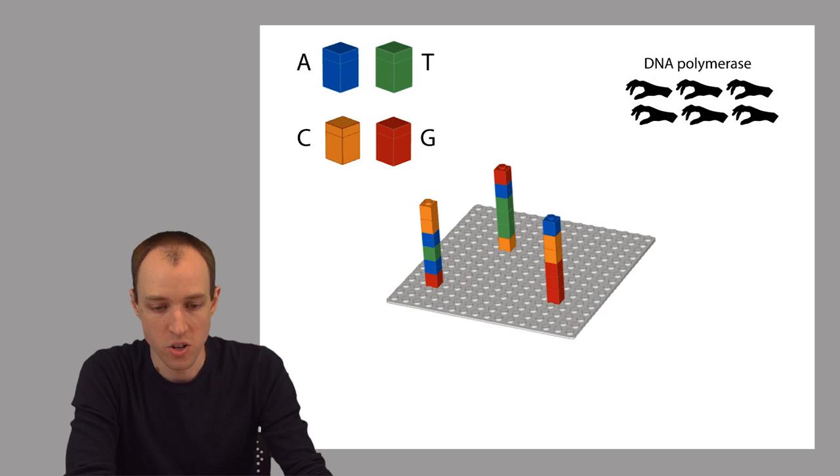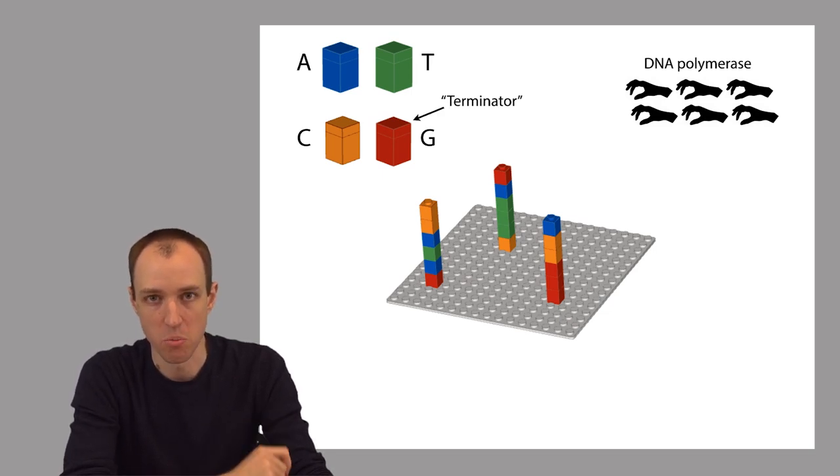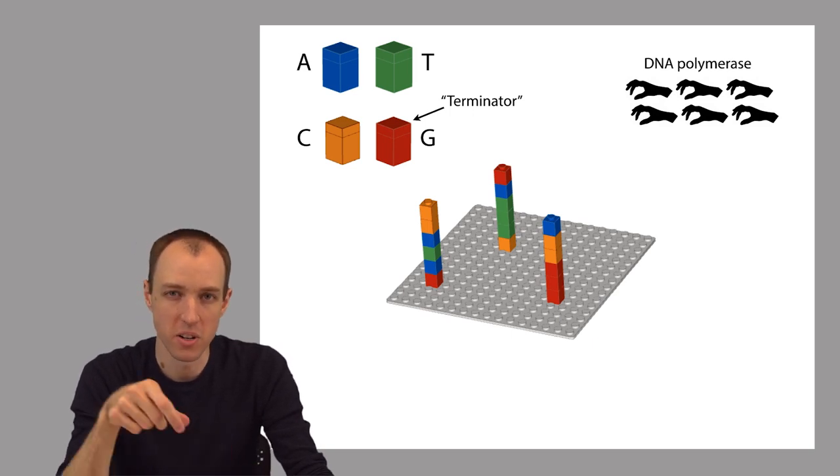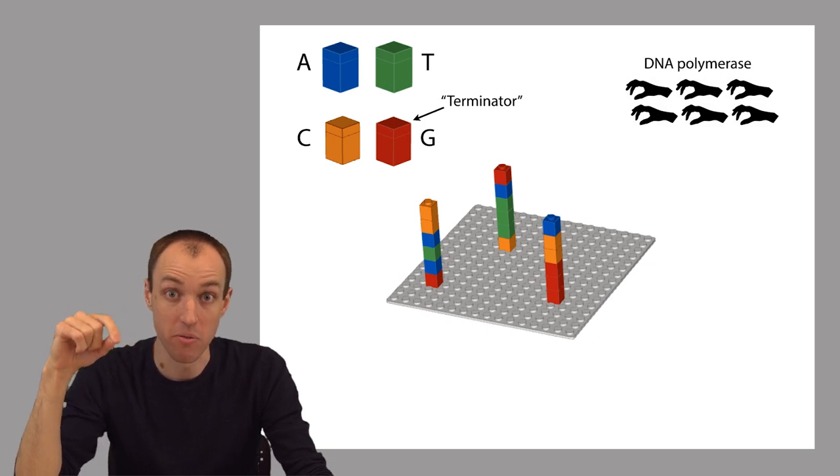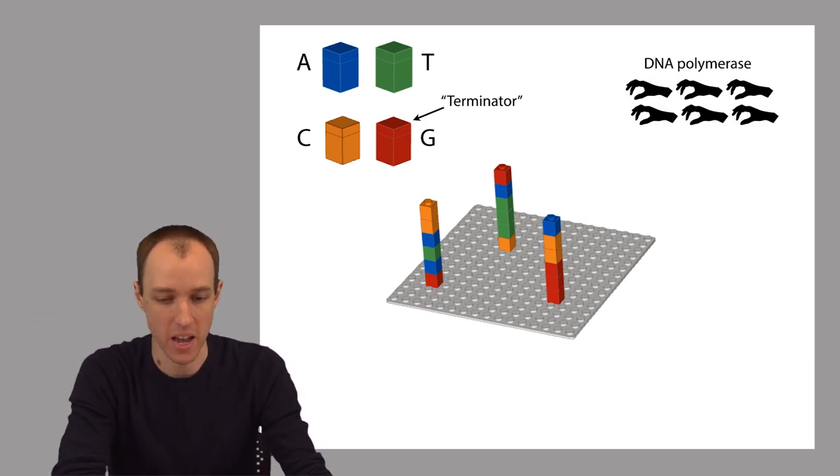Now, since we've thrown in this DNA polymerase and these bases, you might think that the DNA polymerase would just go ahead and make all these single-stranded templates double-stranded. But there's something a little bit different in this example. These bases are terminated. They have a little piece attached to them, which is called a terminator. In our Lego metaphor, you can think of that terminator as like a little flat Lego piece that goes on top, and it prevents another Lego brick from being stacked on top.